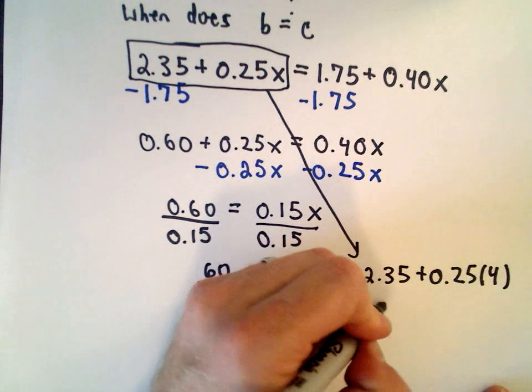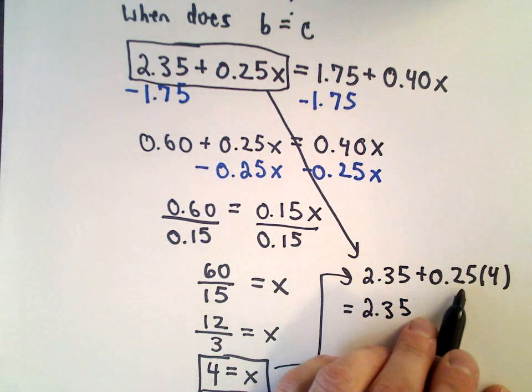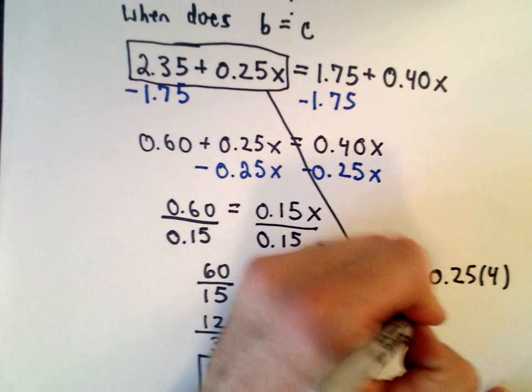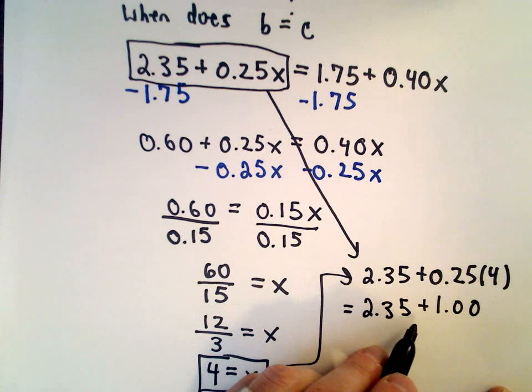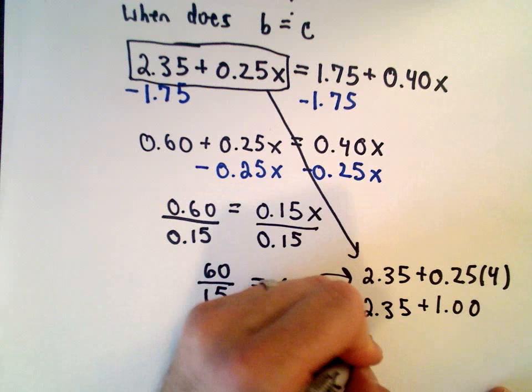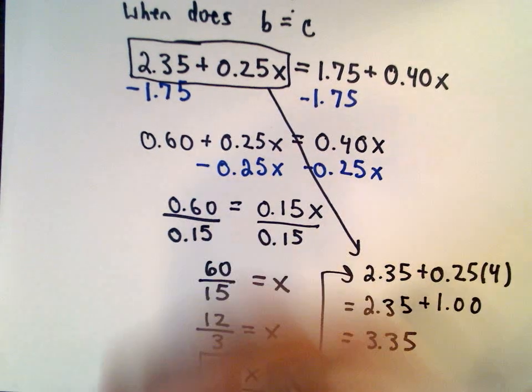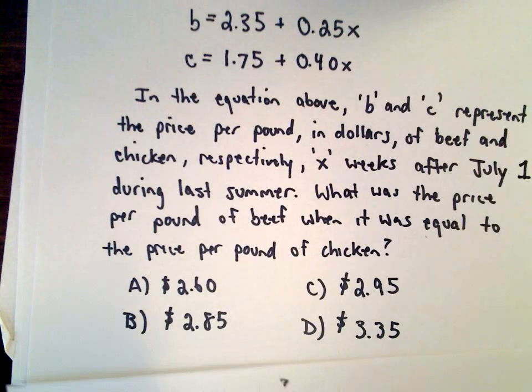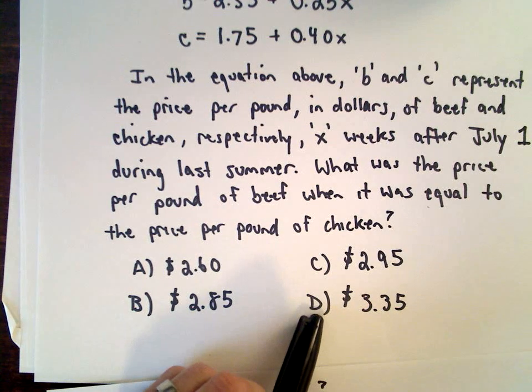And the reason why I said it looks like it's easier was because 0.25 multiplied by four, well that's four quarters and that's going to give me a dollar. So I've got 2.35 plus 1.00. It looks like the prices are going to be three dollars and thirty-five cents when they are equal, which looks like answer choice D.